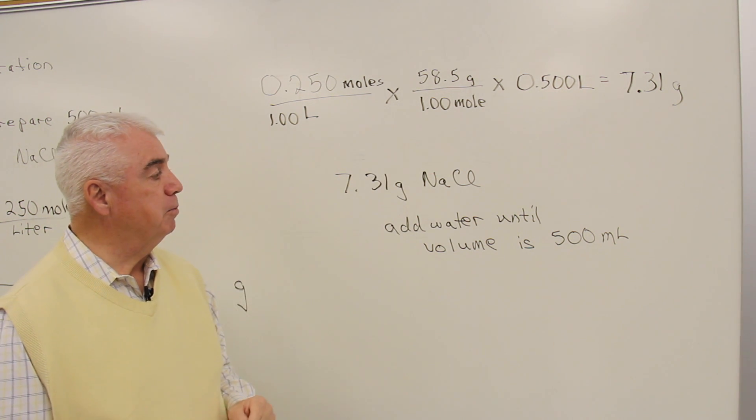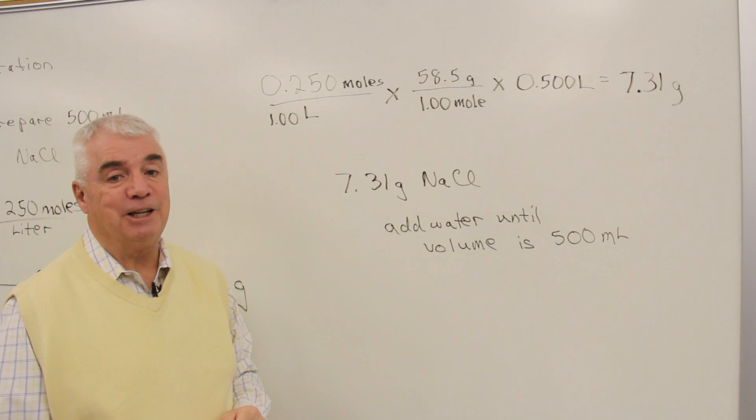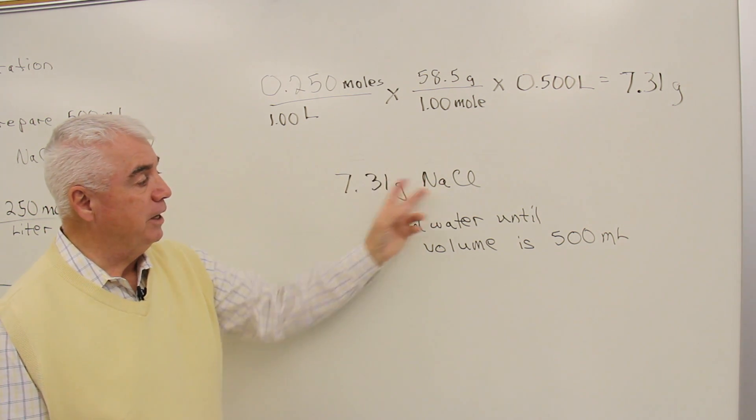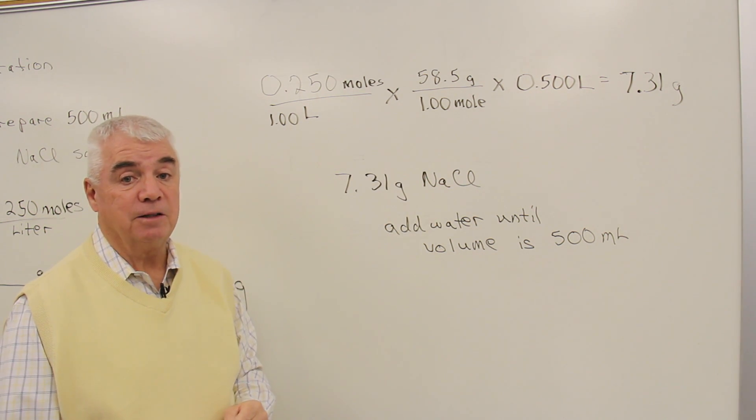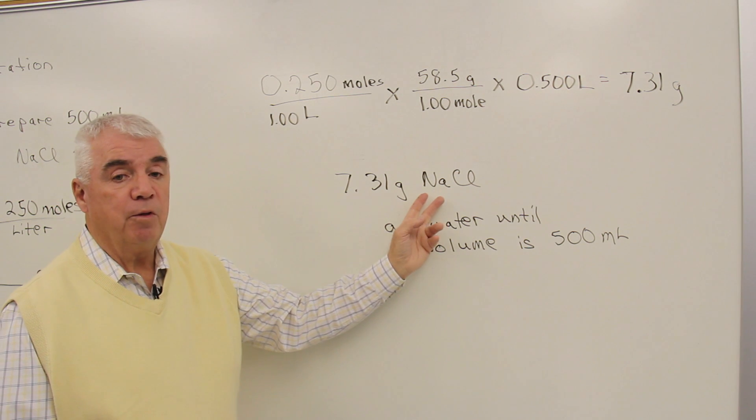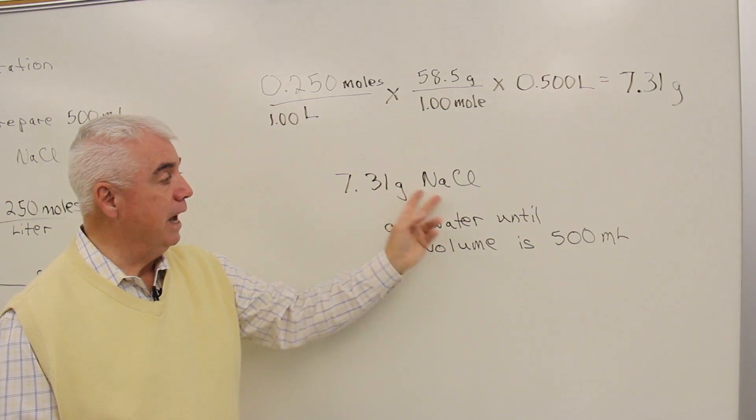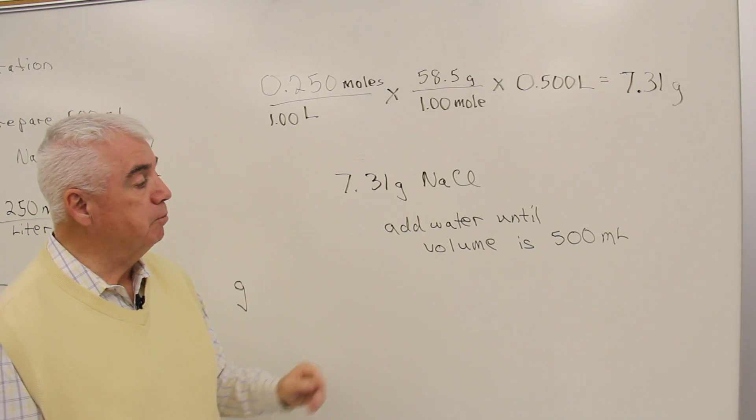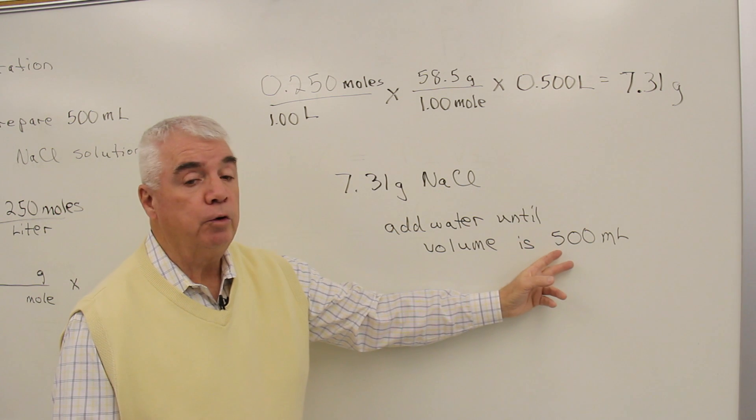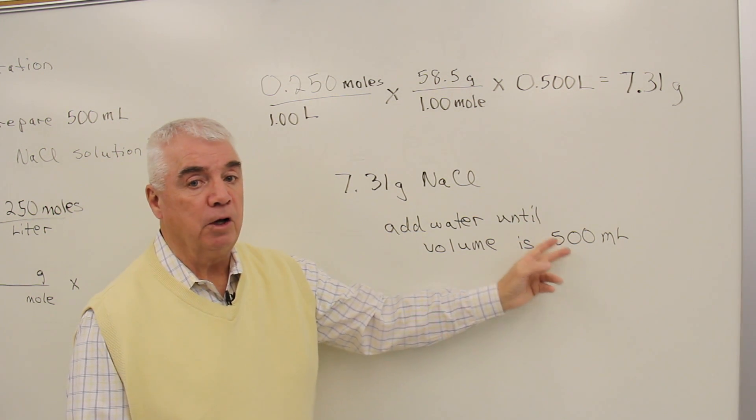This answer, 7.31 grams, we'd need to do one more thing with it. We need to describe how we'd make that solution. We'd go to the balance, we'd weigh out this amount of sodium chloride, and then we dilute it up to 500 milliliters.